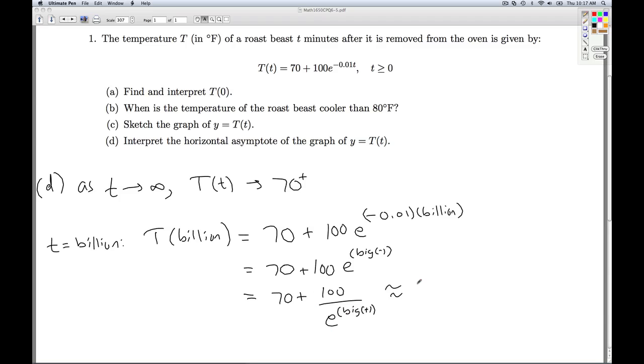If I take 100 over e to a big positive, that's going to be a very small positive. The bigger the number I plug in, the smaller this positive is going to be. And so that's a numerical way to justify what's happening with the horizontal asymptote.